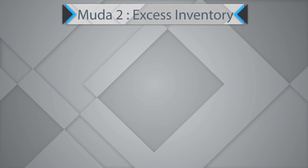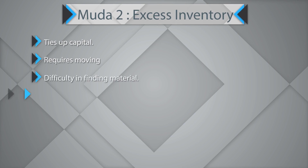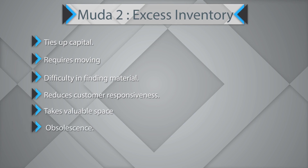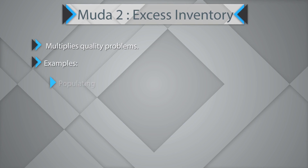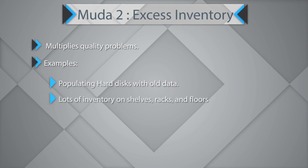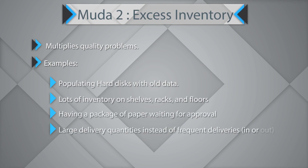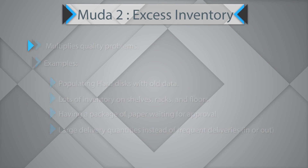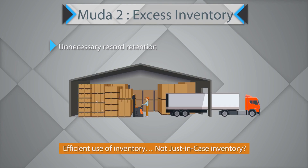The second waste is excess inventory. Excess inventory shall tie up your capital, require moving, cause difficulty in finding material, reduce customer responsiveness, take up valuable space, and can lead to obsolescence, losses due to damage, and multiple quality problems. Examples include populating hard disks with old redundant data, lots of inventory on shelves, racks and floors, packages of paper waiting for approval, large delivery quantities instead of frequent deliveries, and unnecessary record retention. Efficient use of inventory should be done — you should not have just-in-case inventory.